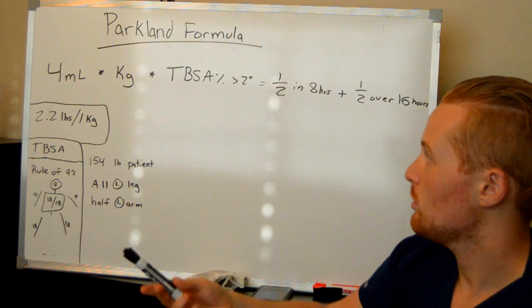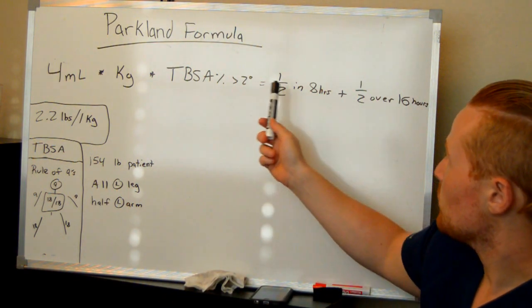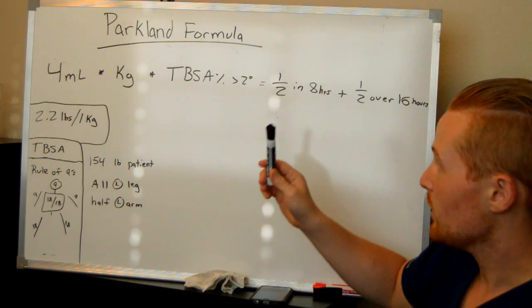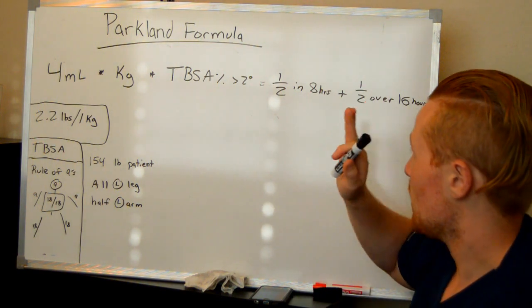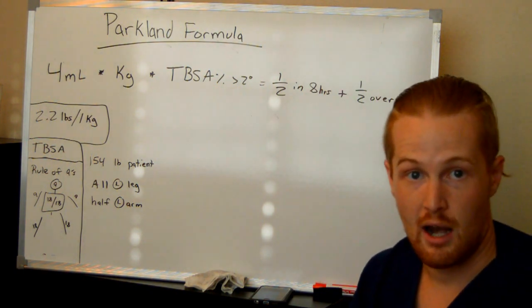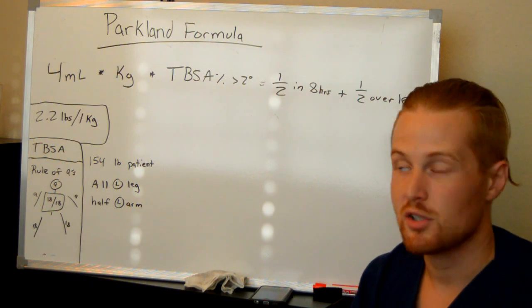Now, let's look at the formula. You can see that what it's going to tell us is how much to give over 24 hours. But more specifically, half of that is going to be given emergently in the first eight hours and then the other half is going to be given over the next 16 hours.